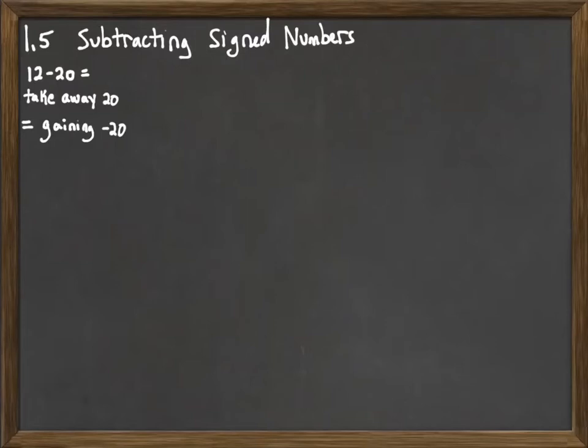So as we do a problem like this 12 minus 20, taking away is the same as gaining a negative. So we can rewrite that subtraction problem as an addition problem. And now understanding what we already understand about adding signed numbers, we can work that problem out.